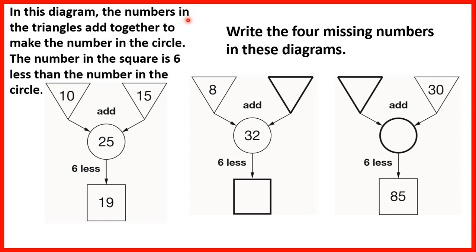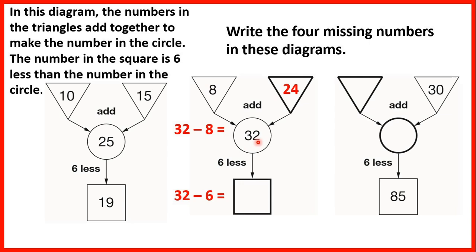In this diagram the numbers in the triangles add together to make the number in the circle, and the number in the square is 6 less than the number in the circle. We can see that 10 plus 15 is 25, and 25 minus 6 is 19. We need to write the 4 missing numbers. So we have 8 plus something is 32. Because we have a missing number addition we can use subtraction: 32 minus 8 is 24, so 8 plus 24 is 32. And 6 less than 32 is 26.